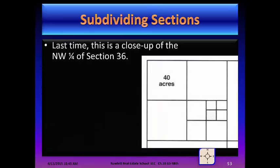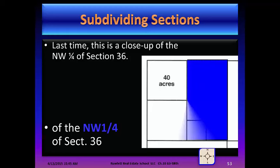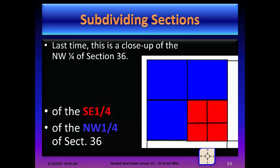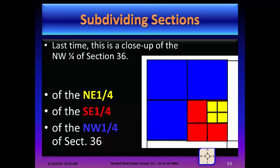Here's a close-up of the northwest quarter of Section 36. The blue represents the entire northwest quarter. The red is the southeast quarter of the northwest quarter — south means bottom, east means right side. Of that southeast quarter, we look for the northeast quarter — north is the top, east is the right side. Then the southwest quarter of the northeast quarter: south for the bottom, west for the left, giving us the green quarter.